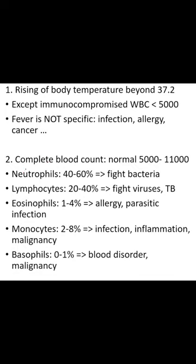You can also confirm infection by complete blood count. The normal white cell count is from 5,000 to 11,000. Neutrophils range from 40 to 60 percent and are raised in bacterial infections. Lymphocytes from 20 to 40 percent fight viruses and tuberculosis. Eosinophils from 1 to 4 percent are elevated in allergy and parasitic infections.